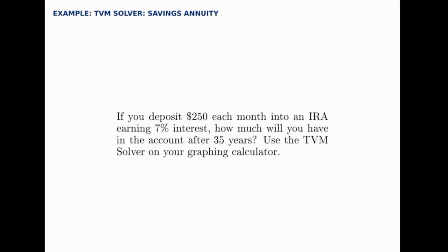In this example, we'll use the TVM solver with a savings annuity. The question reads, if you deposit $250 each month into an IRA earning 7% interest, how much will you have in the account after 35 years using the TVM solver?